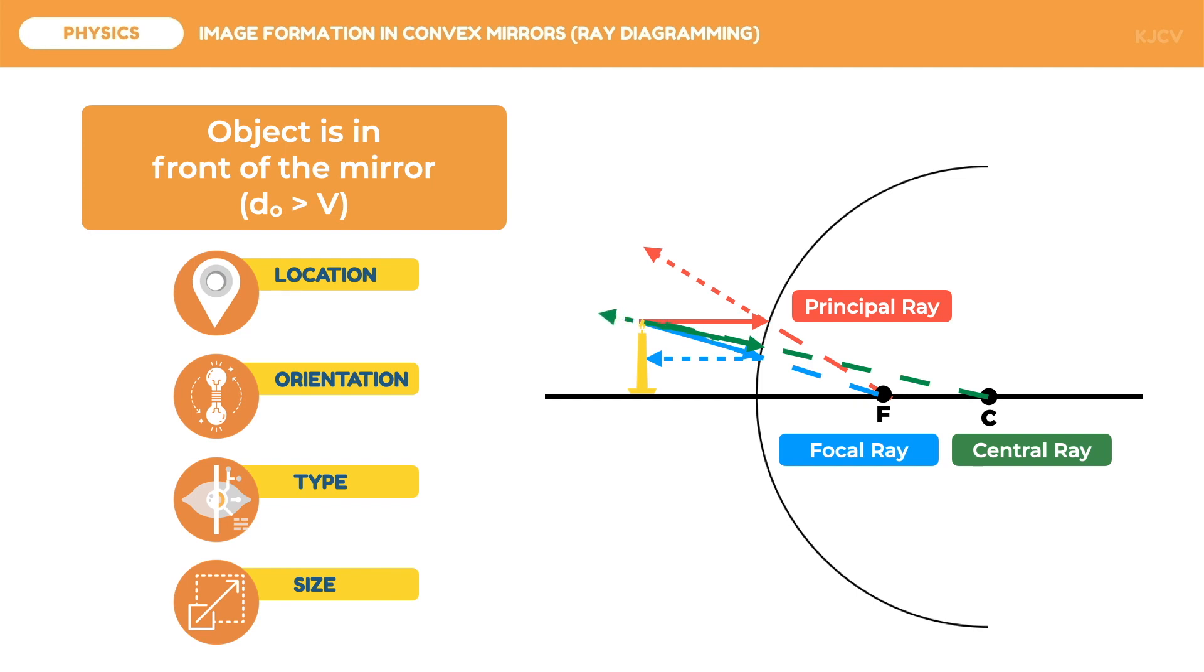The image will form on the intersection of the reflected rays. Here, we can see that no reflected rays will intersect outside the mirror. This does not mean that no image is formed. We can still look for an intersection in the mirror. We just need to extend all reflected rays inward. As we can see here, there's already an intersection in the mirror. This is where the image will be formed. Again, the central ray is optional. Therefore, we can omit this ray.